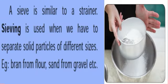Sieving: A sieve is similar to a strainer. Sieving is used when we have to separate solid particles of different sizes. Example: bran from flour, sand from gravel. Wire mesh as a strainer — a sieve is used to separate gravel from sand at a construction site.